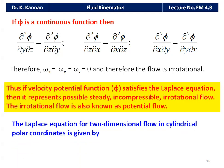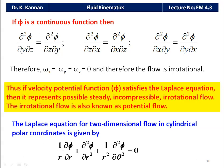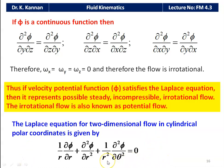The Laplace equation for two-dimensional flow in cylindrical polar coordinates is: (1/r)(∂φ/∂r) + ∂²φ/∂r² + (1/r²)(∂²φ/∂θ²) = 0. This is the Laplace equation in two-dimensional cylindrical polar coordinate form.